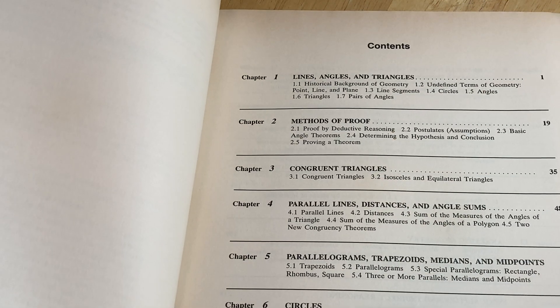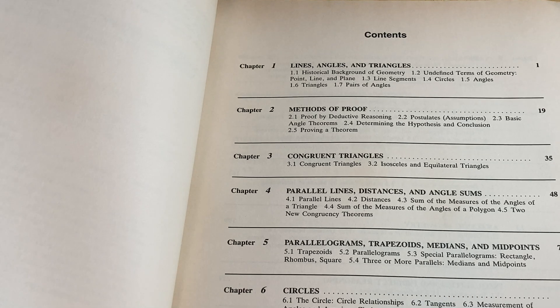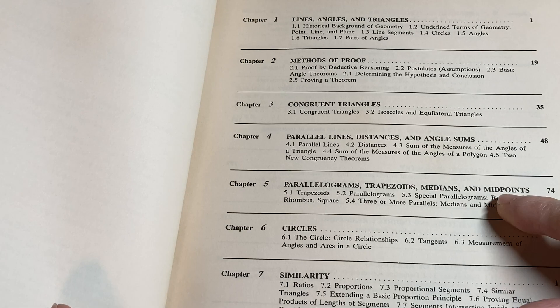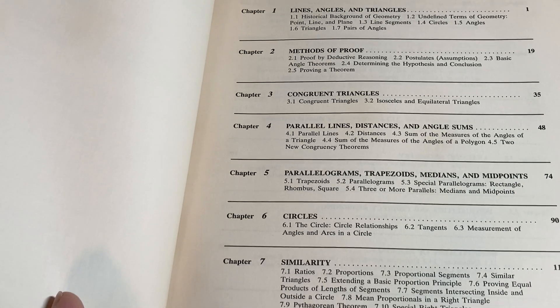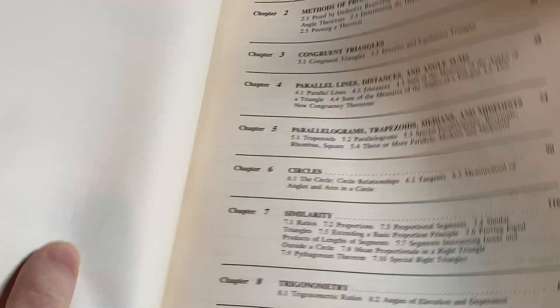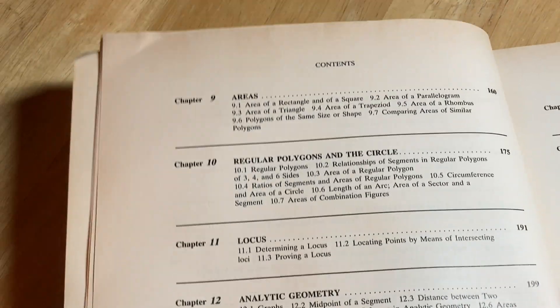Lines, angles, and triangles. Methods of proof. Congruent triangles. Parallel lines, distances, and angle sums. Here's some more topics here. Circles, similarity, and then trigonometry. It actually has trigonometry, which is not something that you might expect.